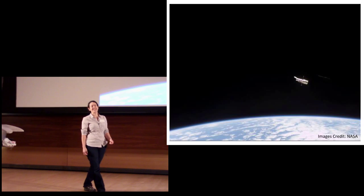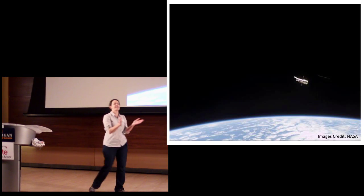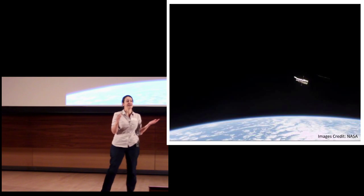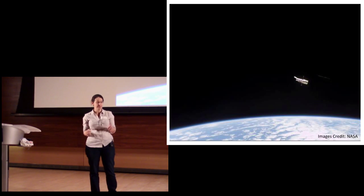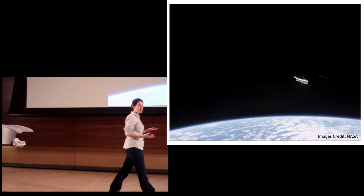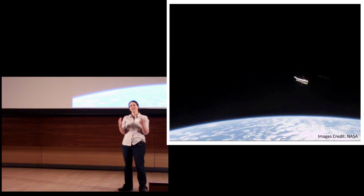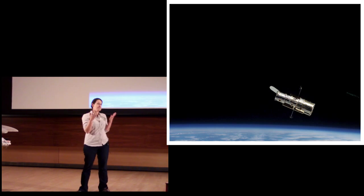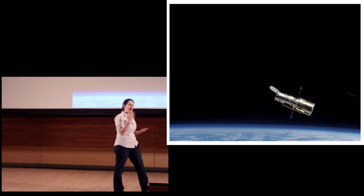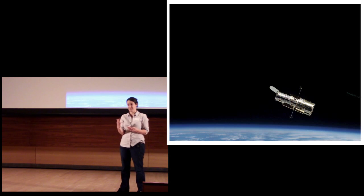So this is the Hubble Space Telescope. It orbits Earth above the Earth's atmosphere and goes around Earth once every 90 minutes or so. It's not the biggest telescope we've ever built, but because of its location above the atmosphere, it can take beautiful, sharp, high-resolution images of space.